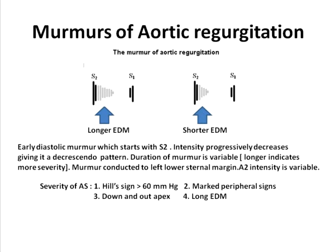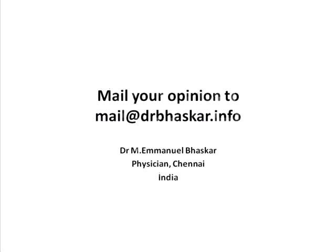A2 intensity is variable: when associated with significant aortic stenosis it may not be audible; it can be normal sometimes, or loud when aortic regurgitation occurs as an isolated chronic condition. Severity of aortic regurgitation is determined by a Hill sign difference of more than 60 mmHg between upper and lower limb BP, marked peripheral signs, an apex shifted down and out, and a long duration of early diastolic murmur.